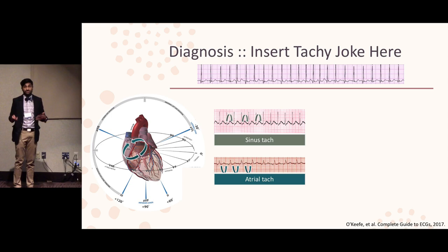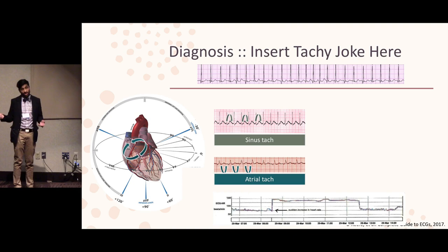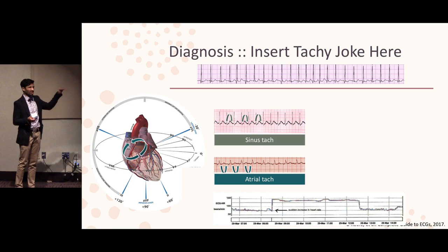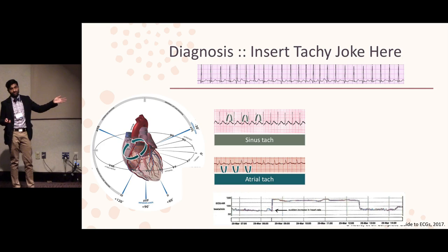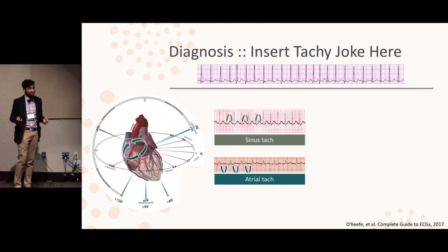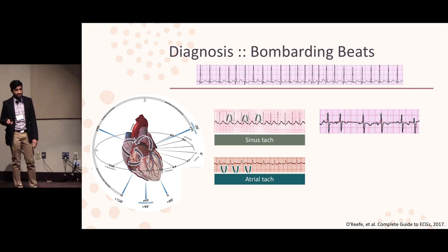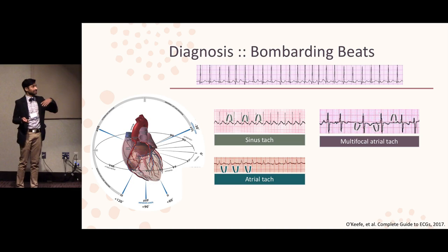Sometimes ATAC can be a little bit tricky and can have a similar P-wave axis like sinus tachycardia, which is why you have to use some other markers like your heart rate trend. In your heart rate histogram, ATAC comes from a separate focus, so you're going to have an abrupt rise in your heart rate, and it's going to be a pretty steady heart rate, unlike sinus tachycardia that has significant sinus node variability. But what happens if there's more than one focus — specifically three? If you have three different P-wave morphologies, this is more consistent with MAT, or multifocal atrial tachycardia.